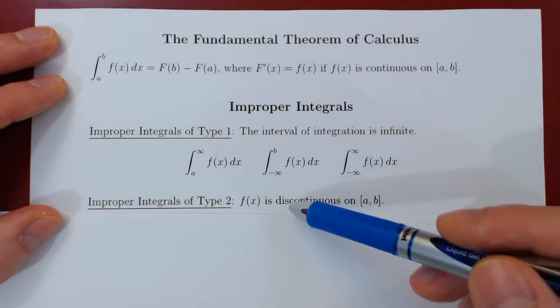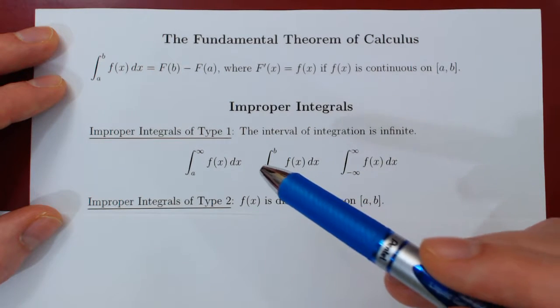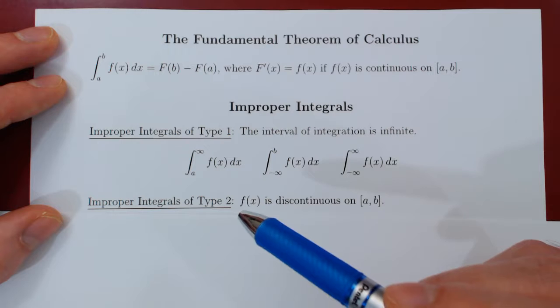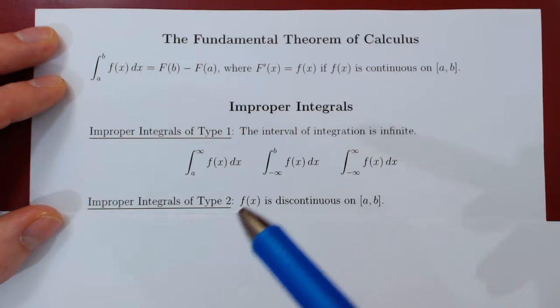But in both cases it's a two-step process. The first is we have to approximate the integral with another integral where we avoid the problem.